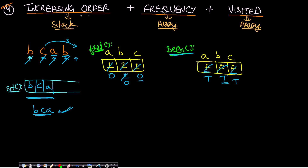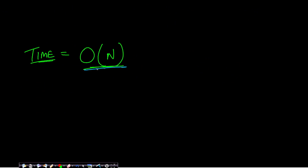The combination of all three data structures — two arrays and one stack — solves the problem correctly. The time complexity is O(n) because we pass through the entire string only once, and random access on the frequency and seen arrays is O(1).